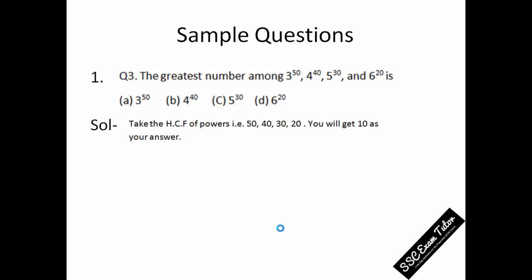I hope you know the way to find the HCF. So the HCF of 50, 40, 30, and 20 is 10. Now what you need to do is divide all the big powers by the HCF and use the quotient as the power.